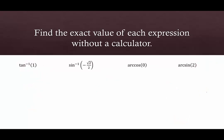A few more examples. We have tangent inverse of 1. This is asking: when is tangent equal to 1, or tangent of what radian measure equals 1? You might recall that's pi over 4. If you have the chart handy, it's really nice and clean to see. So tangent inverse of 1 equals pi over 4.